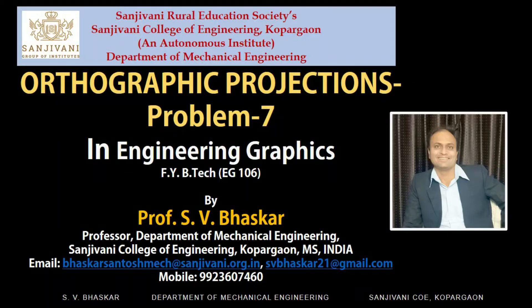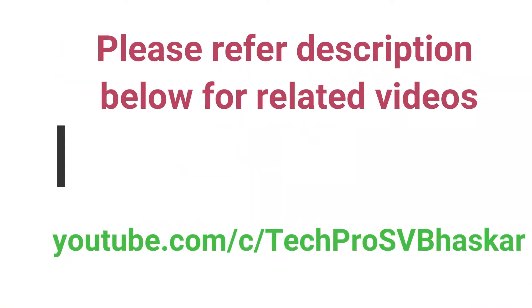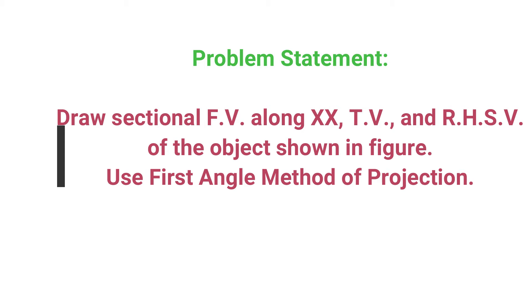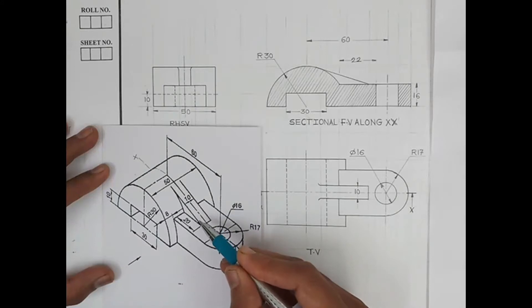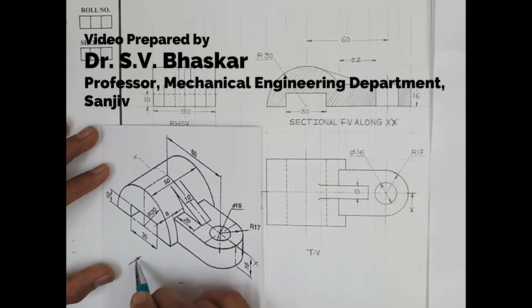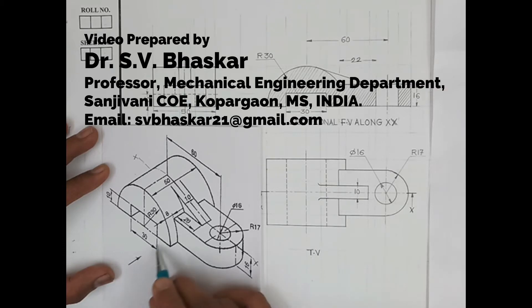Welcome to the next session of the subject Engineering Graphics. You can go to the description below to see all the related videos. The problem statement is: draw sectional front view along XX, top view and right-hand side view of the object shown in figure. Use first angle method of projection. The direction of the observer is given with this arrow — along this direction we have to look in front.